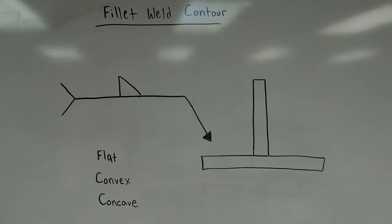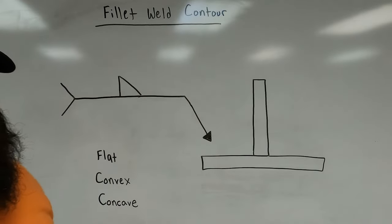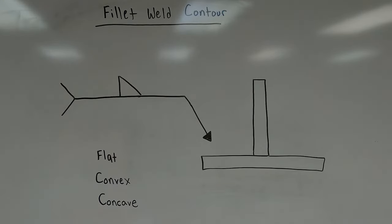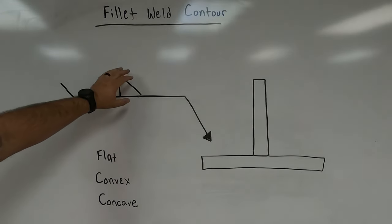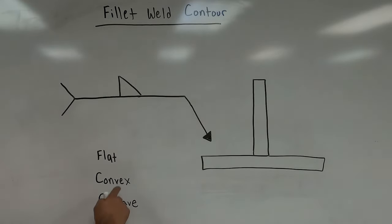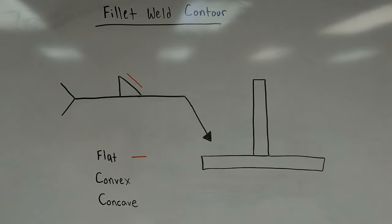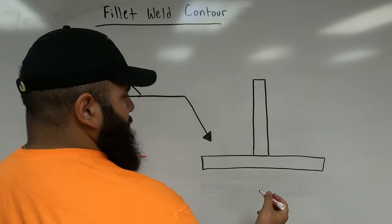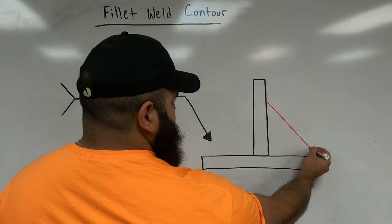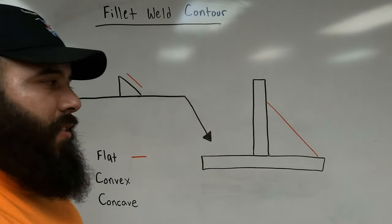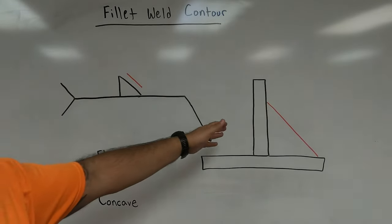There are three types of weld contours and three contour symbols: flat, convex, and concave. They're always placed right on top of the weld symbol. The flat contour is drawn as a straight line placed above the fillet weld symbol. When specified, instead of the face of the weld rounding outward, it goes straight across from one toe to the other.